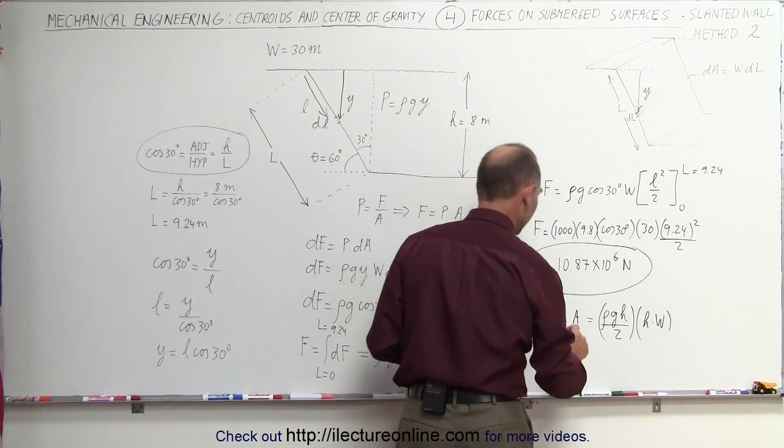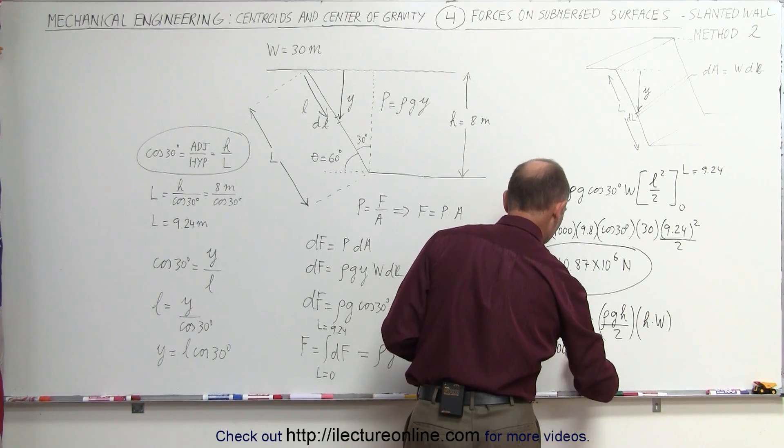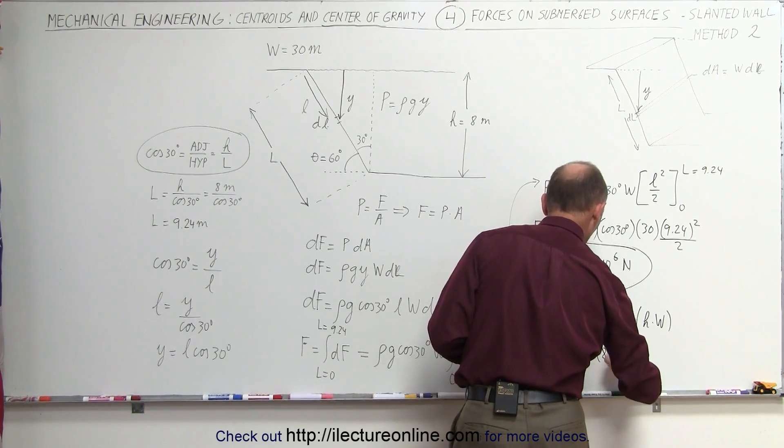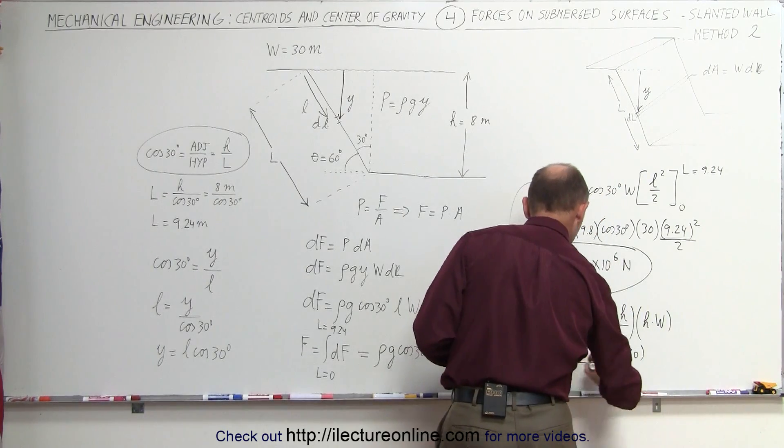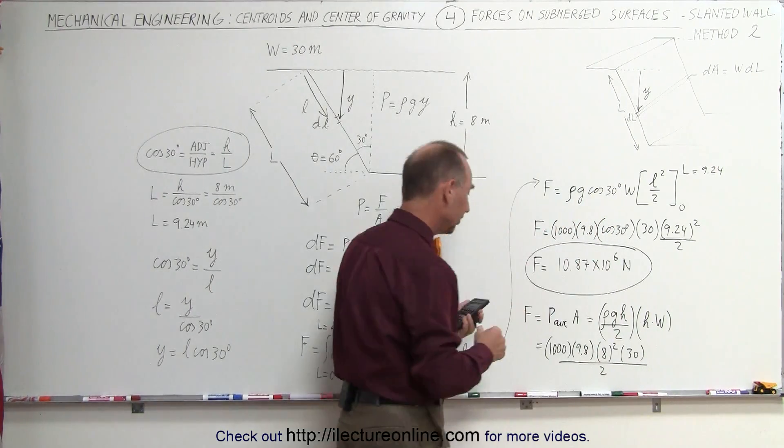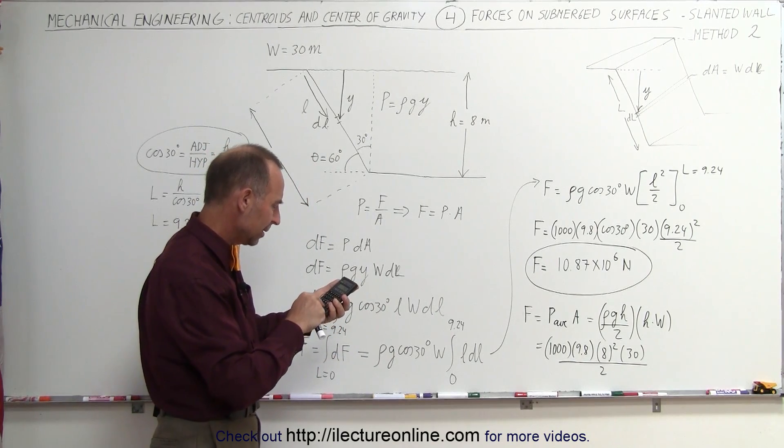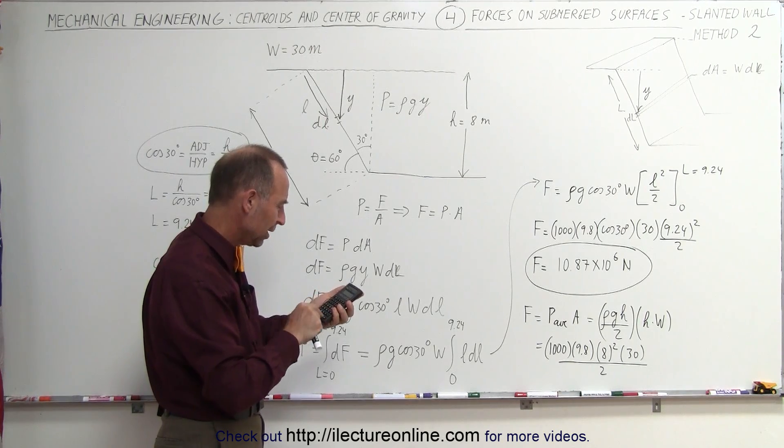Plugging in the numbers for that, this would be equal to 1,000 times 9.8 times h squared. That would be 8 quantity squared times w, which is 30, and the whole thing divided by 2. Let's see what that value would be in comparison. 8,000 times 64 times 30 divided by 2 equals,